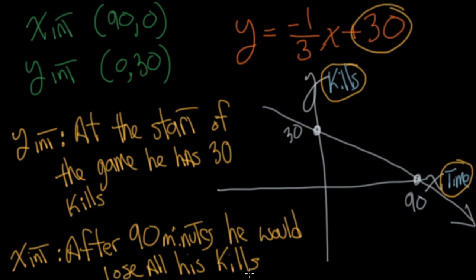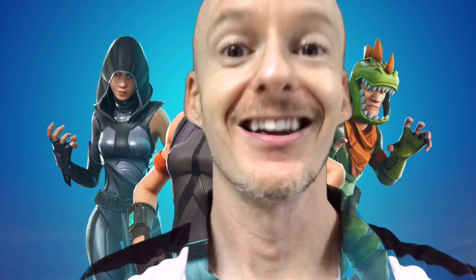So this is called interpreting a linear equation — looking at interpreting the slope and interpreting the x and y intercepts. Hope you enjoyed. Thanks everybody for tuning in to another edition of Math with the Math Jedi. Until next time, go play Fortnite, do some math, have a great day.